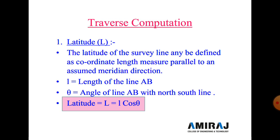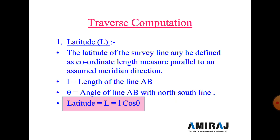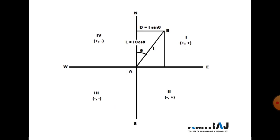Next we start traverse computation — latitude and departure. Both are very important and numerical examples are also asked in the GTU examination. Latitude: the latitude of a survey line may be defined as the coordinate length measured parallel to the assumed meridian direction. Here, small l is the length of line AB and theta is the angle of the line with the north-south line. Latitude L measured toward the north is termed northing and is taken as positive; latitude measured toward the south is termed southing and is taken as negative.